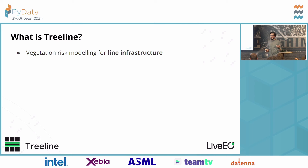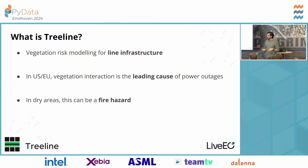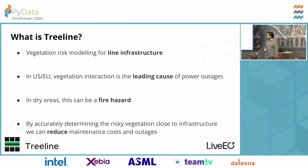Treeline is vegetation risk modeling for line infrastructure — effectively railway lines, power lines, or gas pipelines. We're telling our customers what risk the vegetation poses to their infrastructure. In the US and the EU, the leading cause of power outages is vegetation interaction — trees falling over or growing into power lines. In dry places like California, Texas, or Australia, vegetation interaction can even cause fires. Companies found to be negligent can be held liable and fined. By accurately determining vegetation risk, we can reduce maintenance costs and outages.